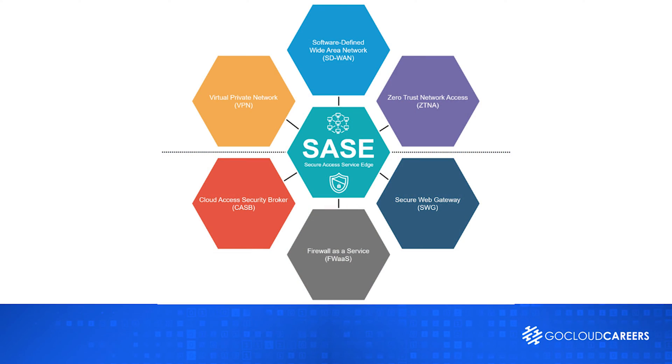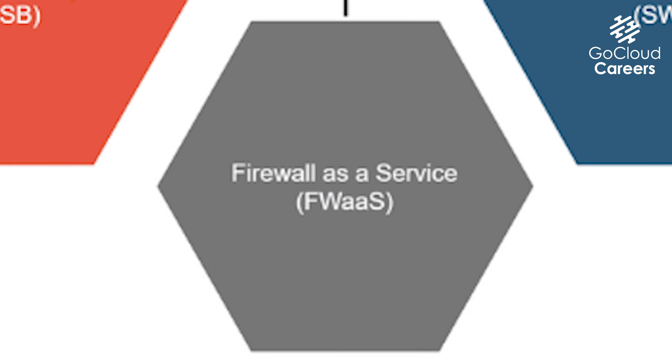Another key component of SASE is firewall-as-a-service. Firewall-as-a-service provides advanced firewall capabilities such as stateful packet inspection, intrusion detection and prevention, and application layer filtering, delivered as a cloud-based service. By moving the firewall functionality to the cloud, businesses can benefit from scalable protection without the need to deploy and manage physical appliances at potentially 20,000, 30,000, or 40,000 remote workers' locations, let alone the organization's offices, wherever they may be.